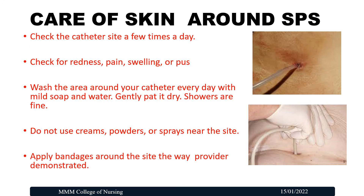Regarding care of the skin around the suprapubic catheter: first, check the catheter site a few times daily — monitoring is very important. Second, check for redness, pain, swelling, or pus, meaning check for any signs of infection. Third, wash the area around the catheter every day with mild soap and water, and after washing, gently pat dry with a cloth. Patients with an SPC can have a shower. Fourth, do not use any creams, powders, or sprays near the site, as these favor the growth of microorganisms. Finally, apply bandages around the site as demonstrated by your healthcare provider.